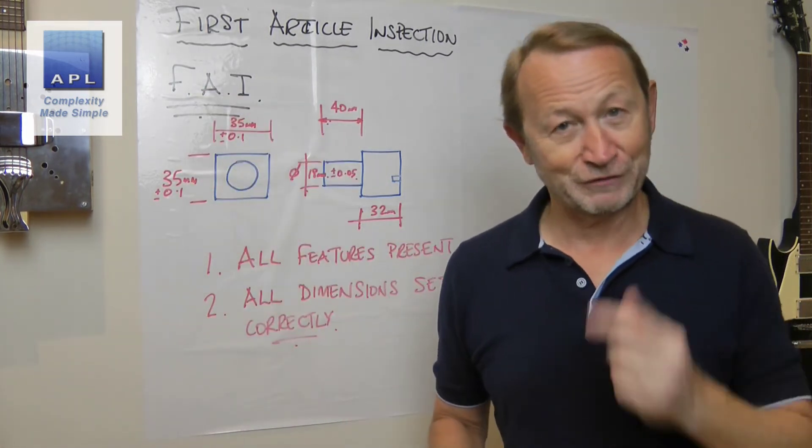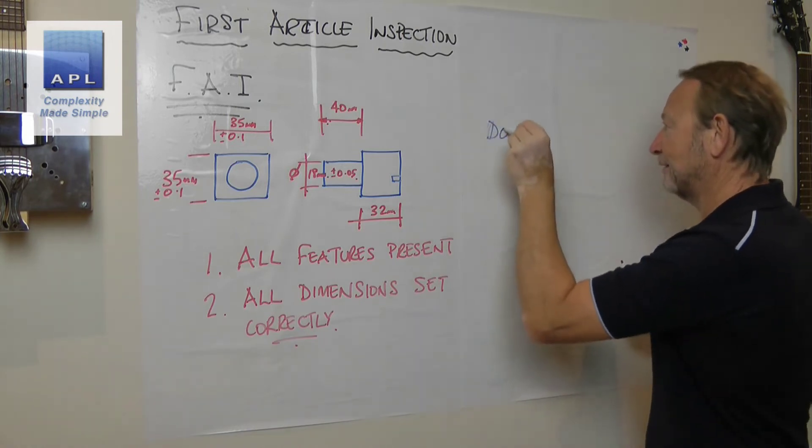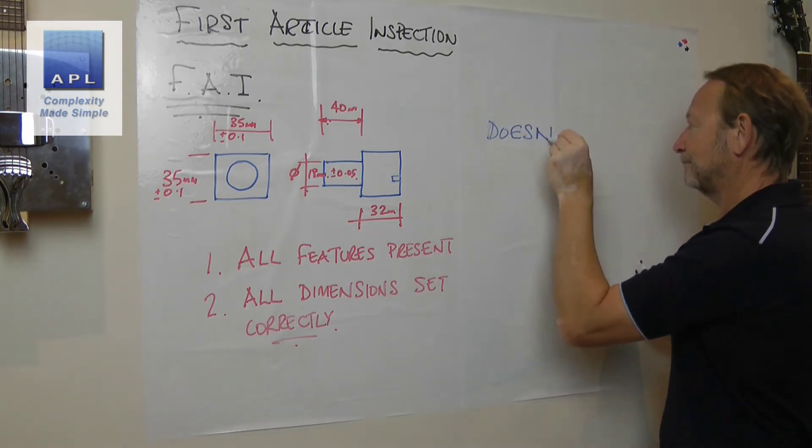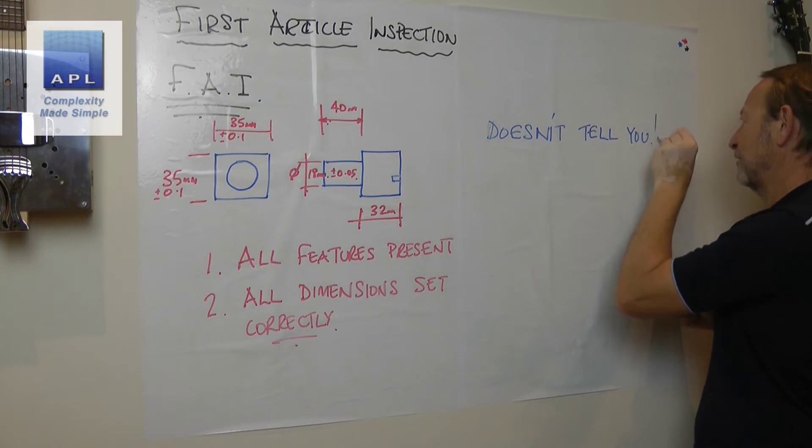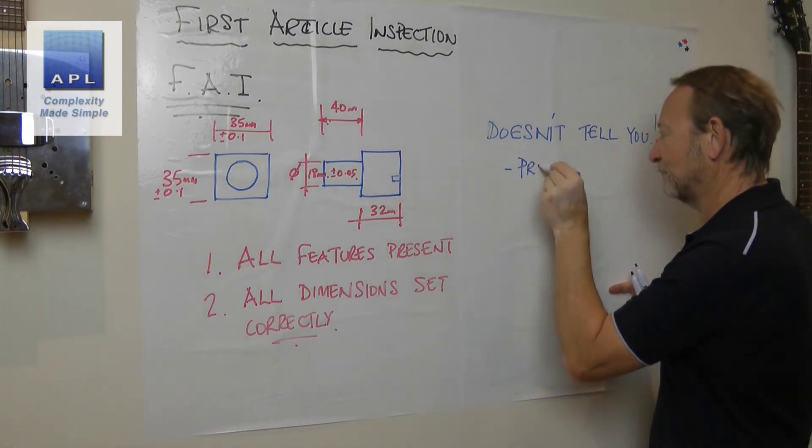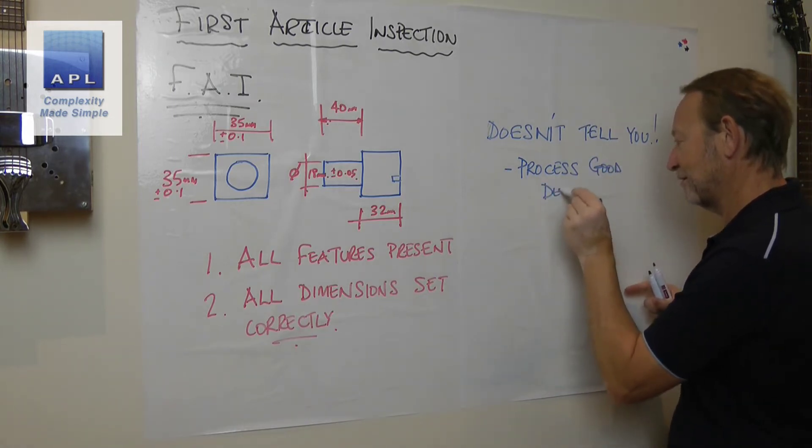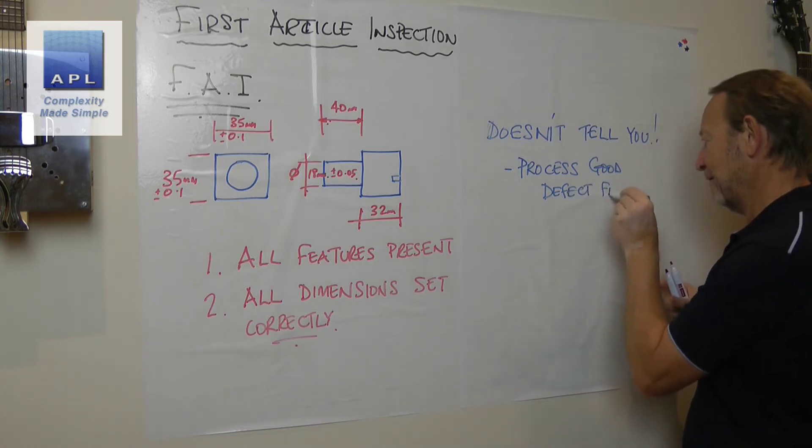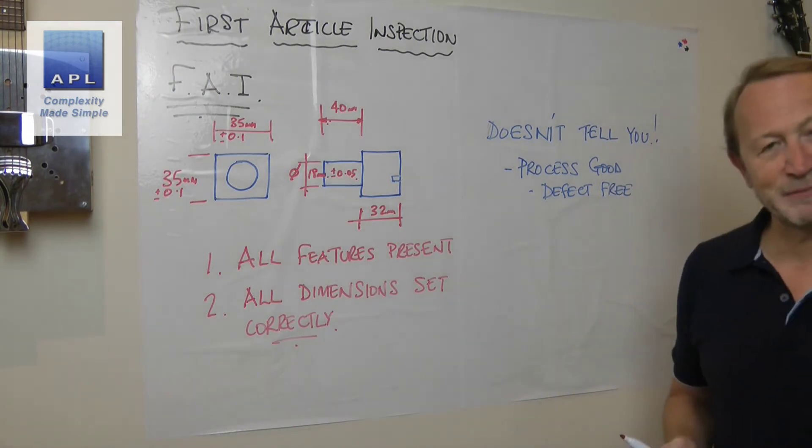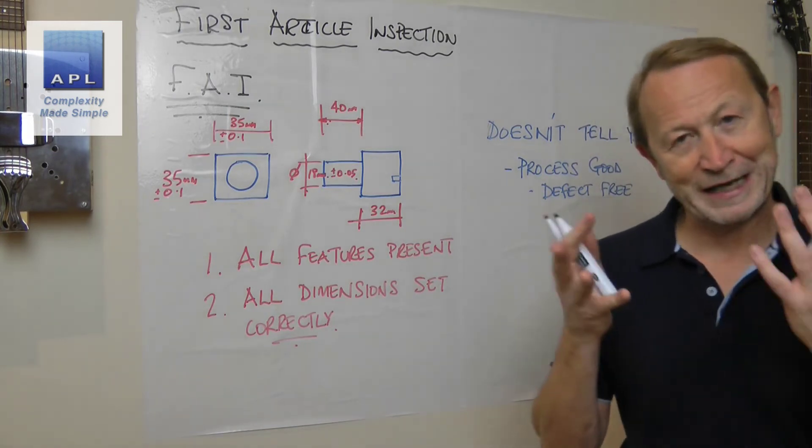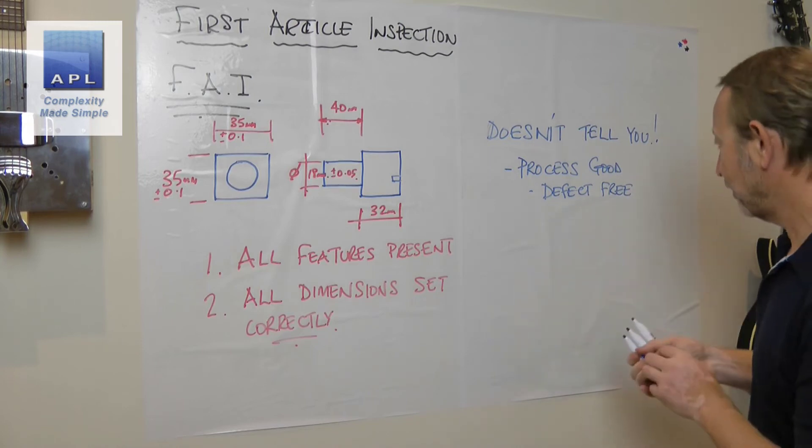What it doesn't tell you: it doesn't tell you that your process is good. In other words, you're going to be defect-free. It's not telling you your process capability. It's just telling you you're in the ballpark, it looks right, and it's approximately the right size. If you want to get this, what are you going to have to do?